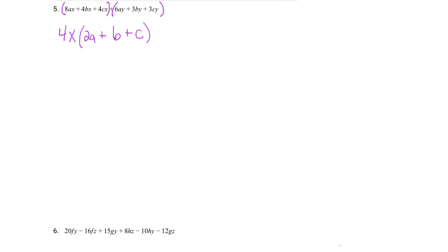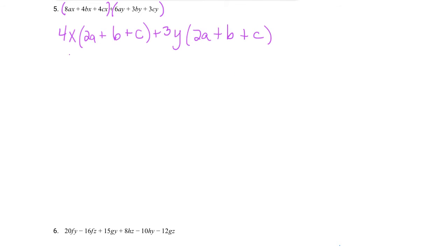Second set: they've all got a y, and coefficients 6, 3, and 3, so I can factor out 3y. 6 divided by 3 is 2a, 3 divided by 3 is b, 3 divided by 3 is c. So that is 3y times 2a plus b plus c. By factor by grouping, what's inside both parentheses is the same: 2a plus b plus c. So we can set this up: what's inside is one factor, and what's outside — 4x plus 3y — is the other. That's as factored as it gets.